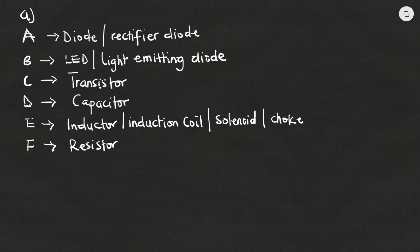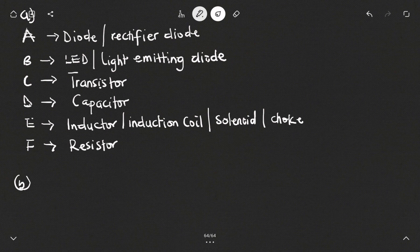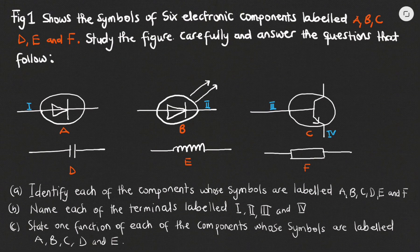Now for part B, we are to name each of the terminals labeled I, II, III, and IV. Going back to the question, we can see that on the right-hand side of the diode symbol the terminal is named I, and on the left-hand side it is named II. Then on the transistor, the left side is named III and the bottom right side is named IV.